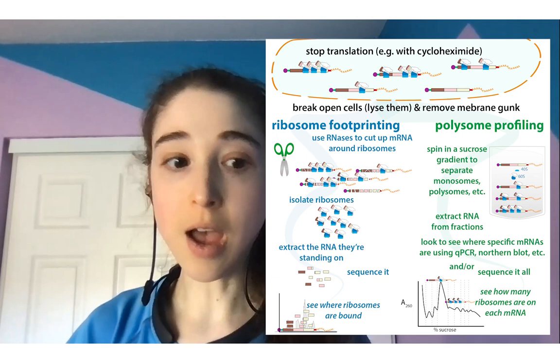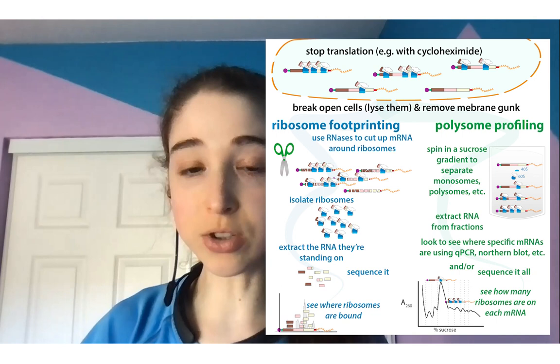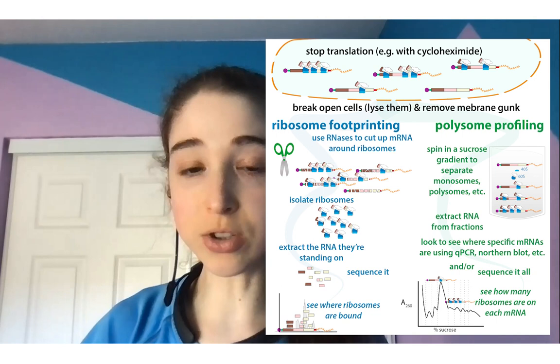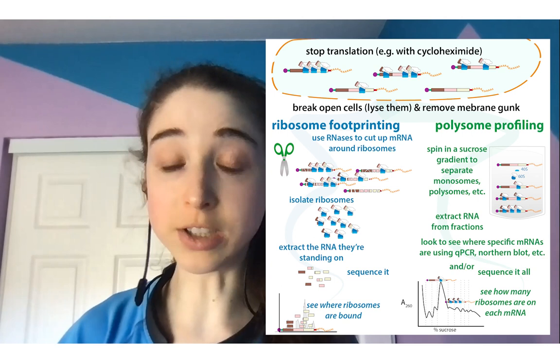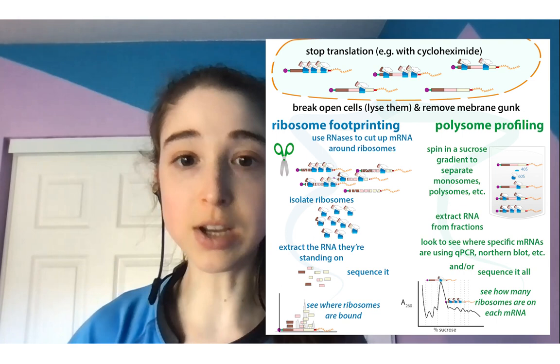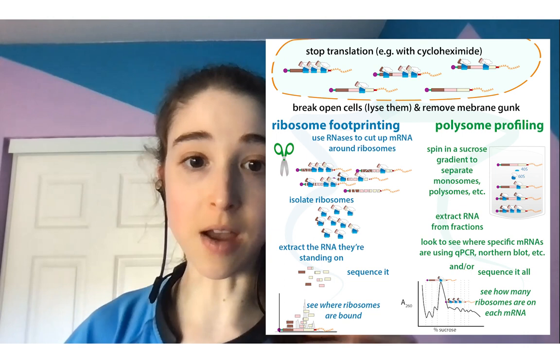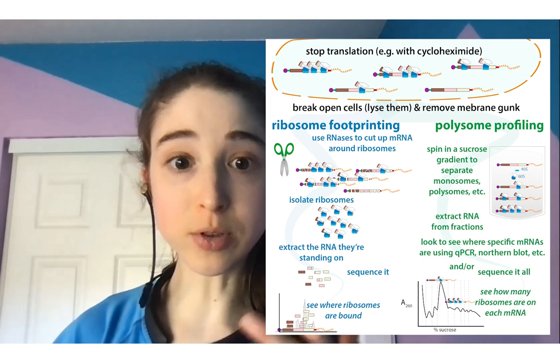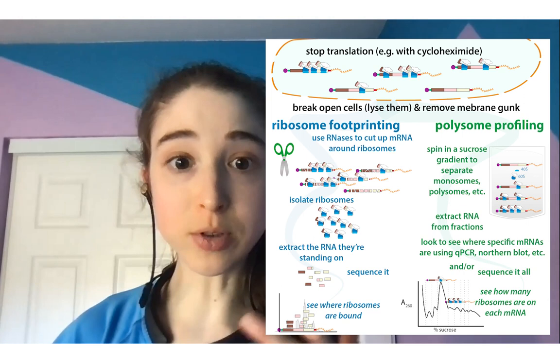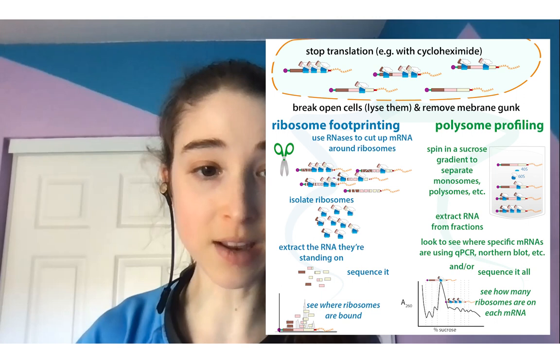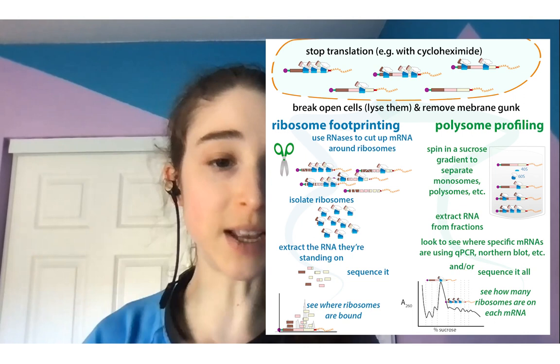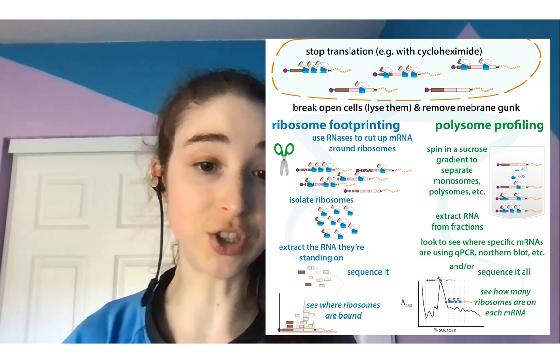The important thing to remember is that with polysome profiling, you're looking at how many ribosomes are on each messenger RNA — like how many boats are on each ride. With ribosome sequencing (ribosec) or ribosome footprinting, you're looking at where the ribosomes are on the messenger RNA. We can also compare between genes — like comparing 'It's a Small World' and Pirates of the Caribbean — and when a messenger RNA becomes more popular, its ribosome density increases: the average number of ribosomes per messenger RNA for that gene.